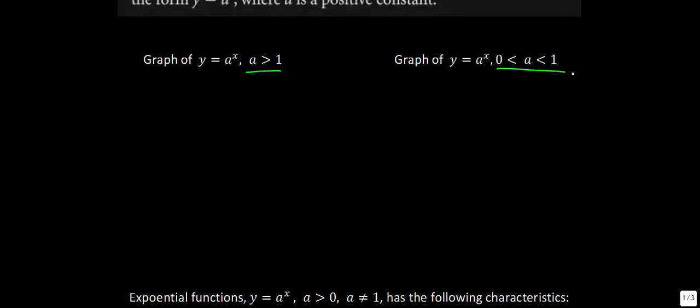For exponential growth, you might have heard scenarios where the rabbit population in a city exploded, because the reproduction of bunnies follows exponential growth pretty closely. There may be some funny examples throughout this unit, but let's dive into what these graphs look like.